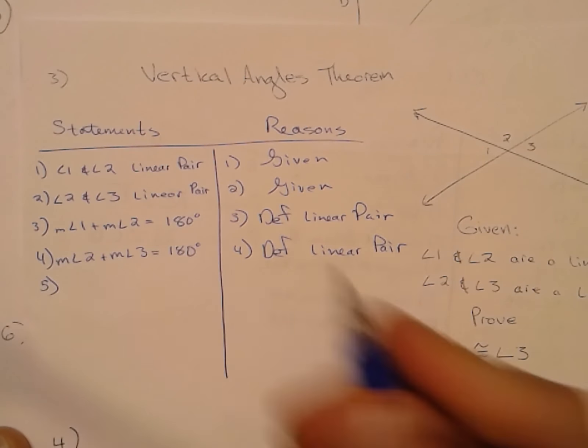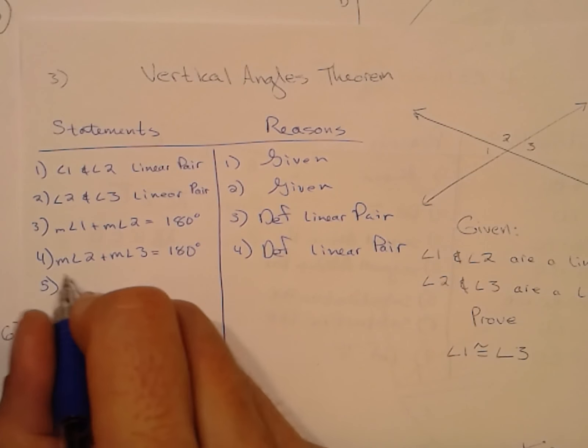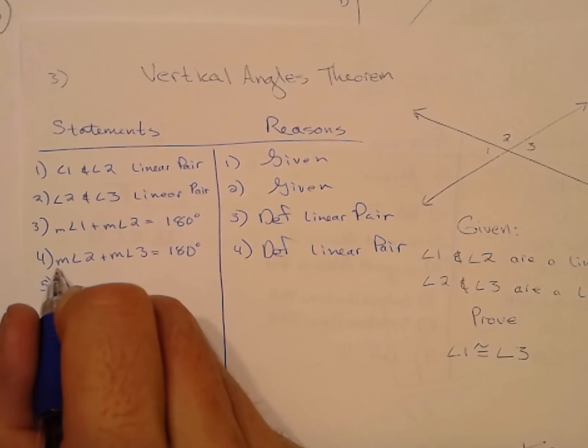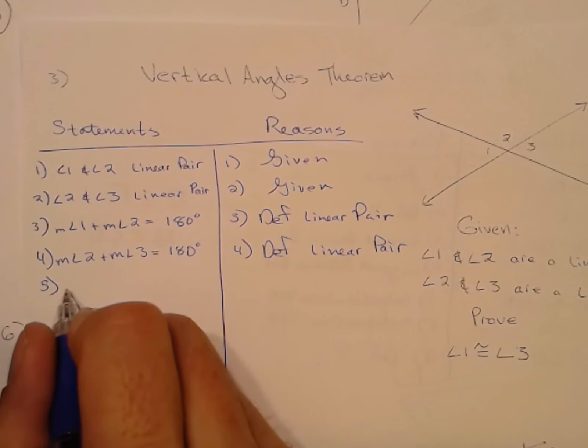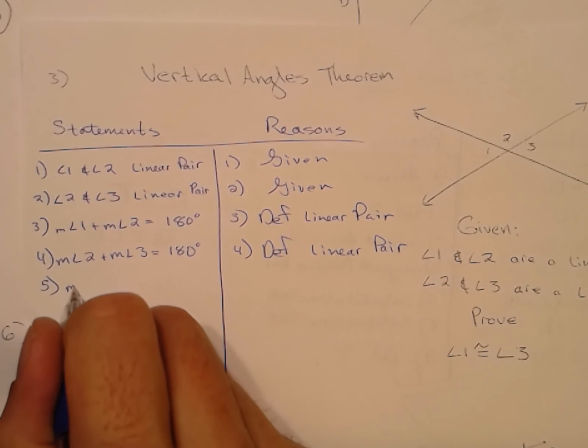Both of these things equal 180, so through the transitive property we can set the measure of angle one plus the measure of angle two equal to the measure of angle two plus the measure of angle three.